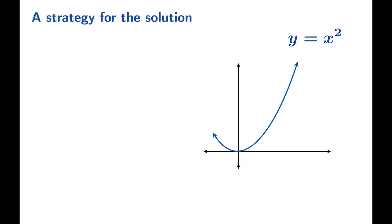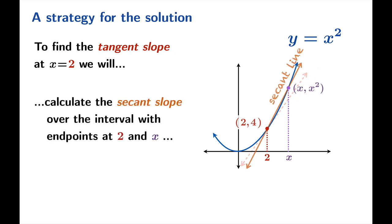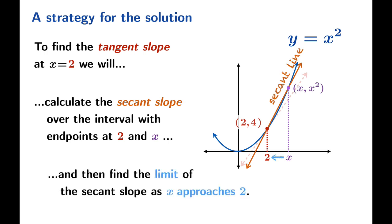So what's the strategy for the solution to this problem? To find the tangent slope at x equals 2, we will calculate the secant slope over an interval with endpoints at 2 and some other argument x, and then we'll find the limit of the secant slope as x approaches 2.